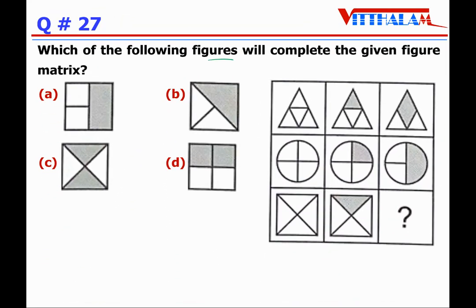Question 27: Which of the following figures will complete the given figure matrix? The pattern is: a triangle divided into four equal parts with one part shaded, then two parts shaded. Similarly, a circle with one part shaded then two parts shaded. So for the square, one part is shaded, and the missing figure should have two parts shaded. This matches option B.